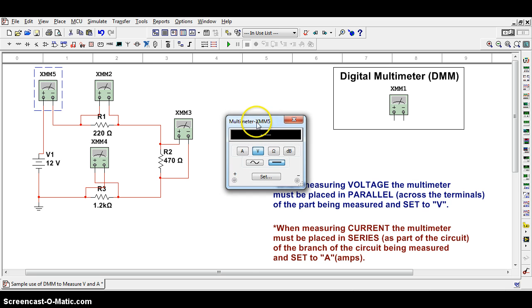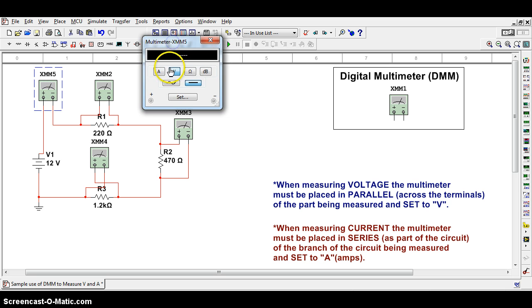I'm going to double-click on it and change the setting here. I want to measure current, so I must measure amps. So if I click amps, that'll be all set to go.